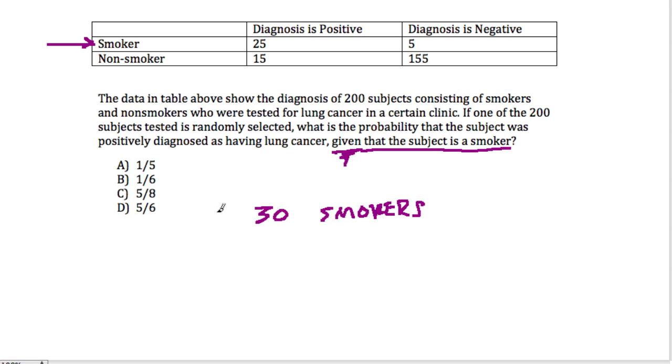And given that they have a smoker, what is the probability that the subject was positively diagnosed as having lung cancer? Well, 25 out of 30. So there's 25 positive diagnosed smokers out of the total number of smokers, which is 25 out of 30, or 5 out of 6 are answer D.